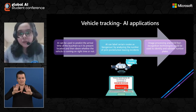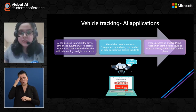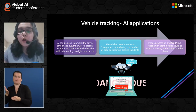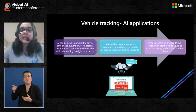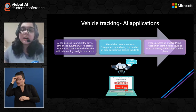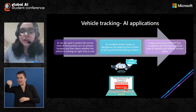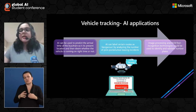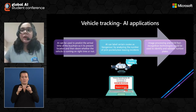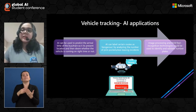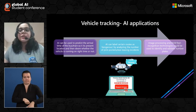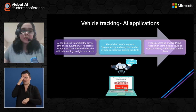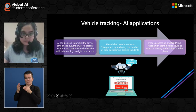Even before a crime has been reported, the police control room vans have already been alerted and would keep tabs on the bus. Image processing and OCR text recognition technologies could also be used to identify and validate number plates.